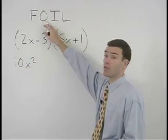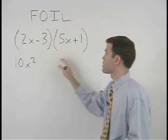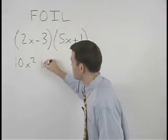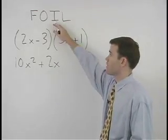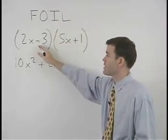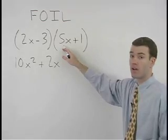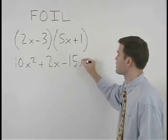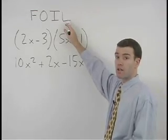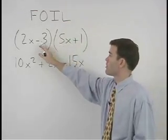Plus the product of the inner terms, which is negative 3 times 5x or negative 15x, plus the product of the last terms, negative 3 times positive 1, which is negative 3.